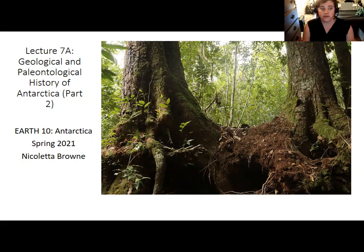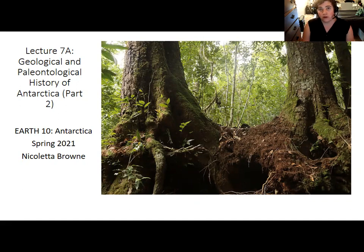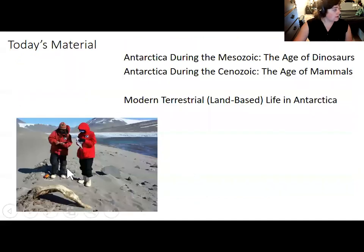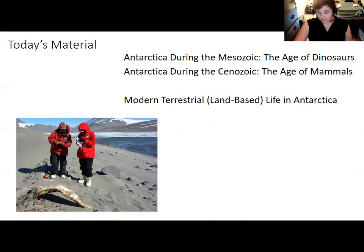The much shorter lecture 7b will be about the survivors of the opening of the Antarctic circumpolar current and the events that turned Antarctica into a dry, cold desert essentially. Today's material will move from the age of dinosaurs into the age of mammals and then discuss modern land-based Antarctic life.